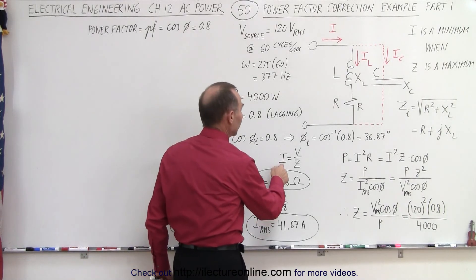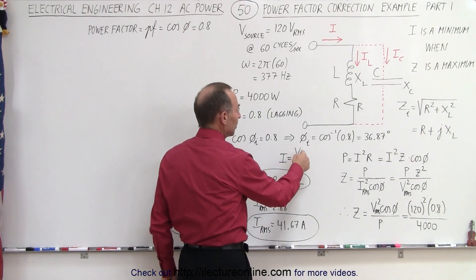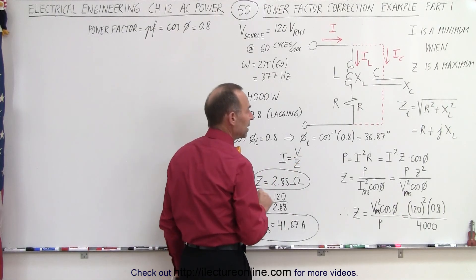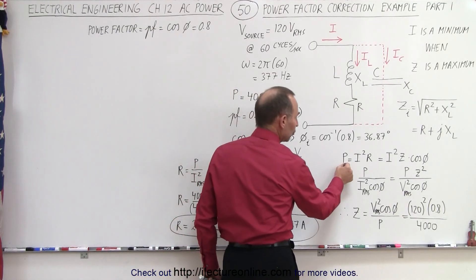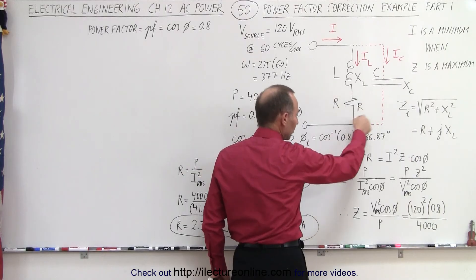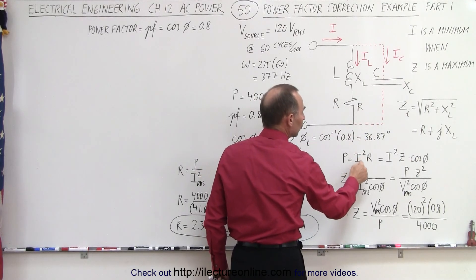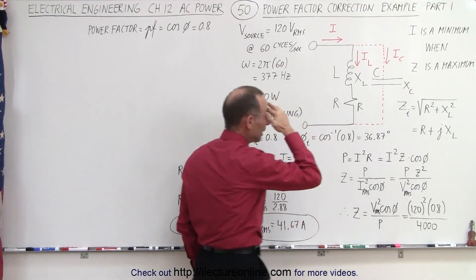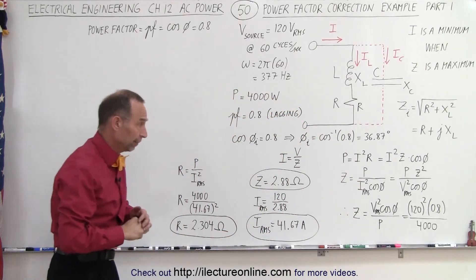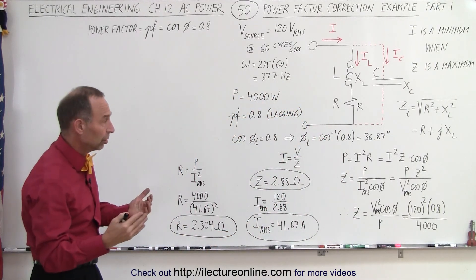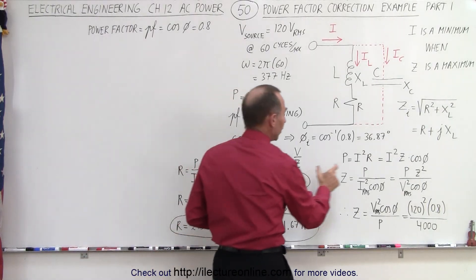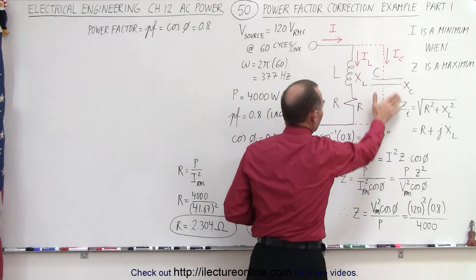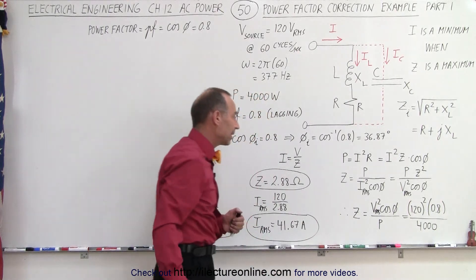Well, first of all, we know that the current in a circuit is always going to be the voltage provided by the impedance, and the power consumed by the circuit, in this case consumed by the resistor in the circuit, is going to be I squared times R. That would be the original current and the original power provided. We do not yet have a capacitor.